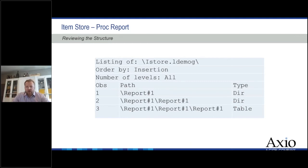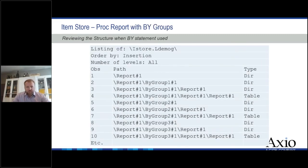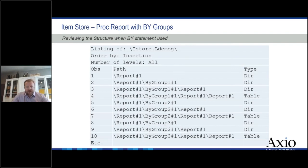Looking inside an item store from PROC REPORT we see directories and tables. But if we add a by statement — a by variable — maybe we do this PROC REPORT by site or by patient, we start to see the internal structure change. There's a table for the first by-group, a table for the second by-group, third and fourth, and so on. Remember, this item store contains bits and pieces of procedure output I can access independently. So maybe I create an item store for demographics and one for baseline characteristics — then I can think about combining all information for site one (by-group one) and all information for site two (by-group two) into a single document.